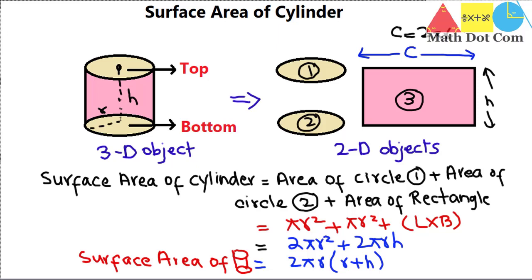So this is the basic formula that you have to use whenever you are going to find the surface area of the cylinder. What you need is just the radius and height of the cylinder so that you can easily find the surface area of any given cylinder. That's all from today's lecture. Stay tuned for the next. Thank you.